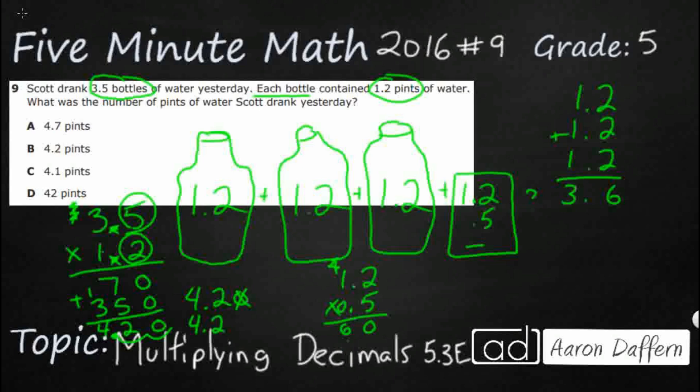We go back to the same thing. How many digits are behind the decimal? In the factors, I've got one digit there, one digit there. I need two digits behind the decimal. One, two. So really, half of 1.2 is 0.6, which makes sense. If you double 0.6, you're going to get 1.2.